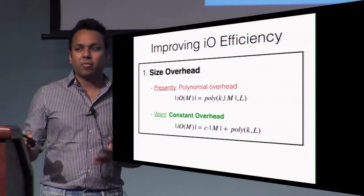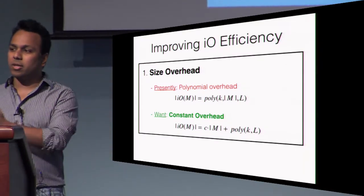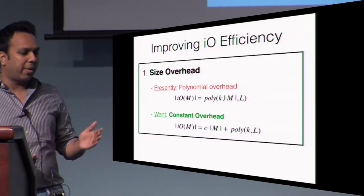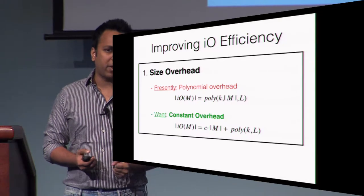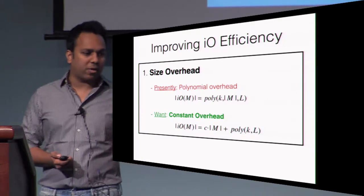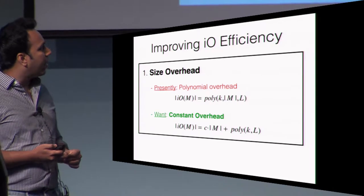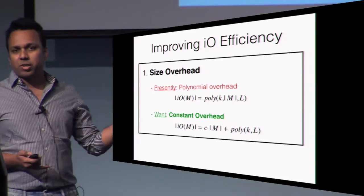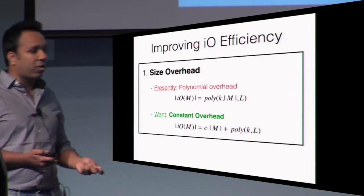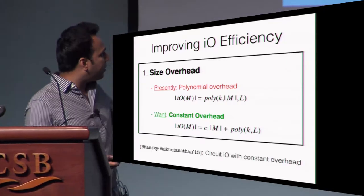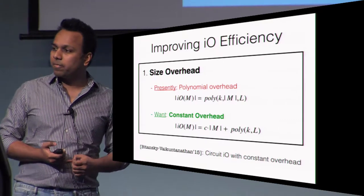What we want is a constant overhead — the size of the obfuscated program should only be a constant times the size of the underlying program M, plus some additive polynomial overhead in the security parameter and the input length bound L. While we are studying this question for the case of Turing machines, this question is already quite interesting for the case of circuits. In that case, the work of Bitansky and Bakunathan actually showed how to resolve this problem.